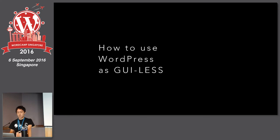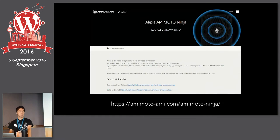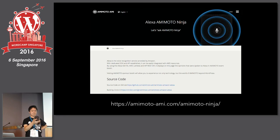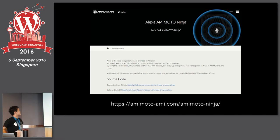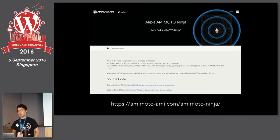Second, how to use WordPress as GUI-less. Our team made an example application named AmimotoNinja. We make an application and into this device, talk about our product, our team, and WordPress. AmimotoNinja — you say to it 'what is WordPress,' and Alexa calls back with 'WordPress is a web service,' and more, introducing WordPress.